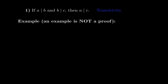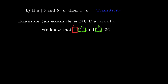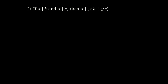Recall that an example is not a proof — giving an example does not prove the statement. So: we know that 4 divides 12 because 12 is 3 times 4, and also 12 divides 36. Here a is 4, b is 12, and c is 36. By transitivity — assuming we already know both divisibility facts — a divides c, meaning 4 divides 36. That's an example of the first property.